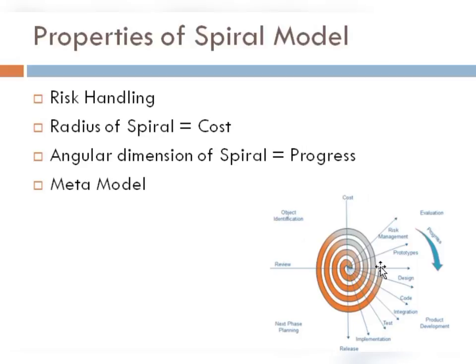Second property is the radius of the spiral. जैसे जैसे आपके spirals बढ़ते जाएंगे आपका radius बढ़ता जाएगा। यह जो radius है किसी भी spiral का, it signifies the cost of your project — जैसे जैसे आपका radius बढ़ेगा वैसे वैसे आपके project की cost बढ़ती जाएगी।